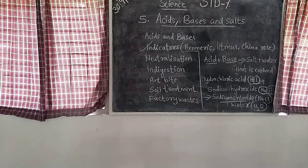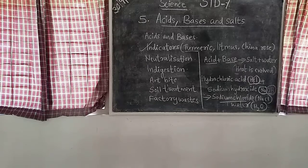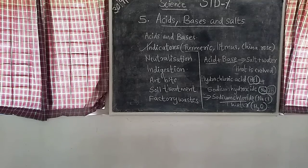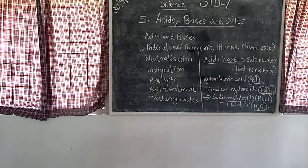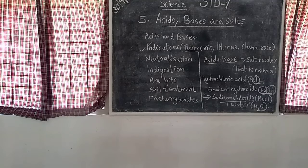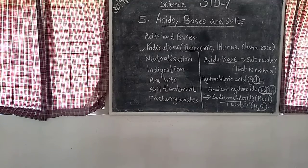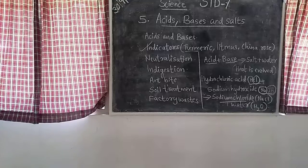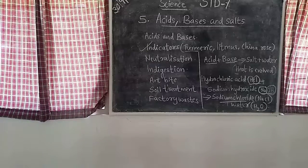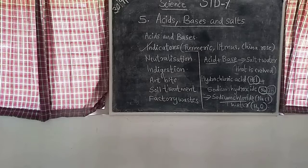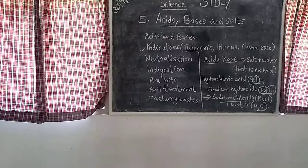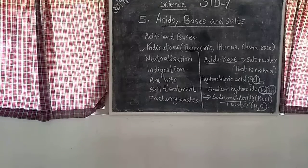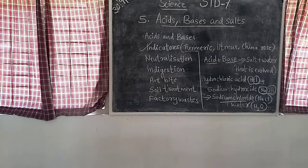Next is soil treatment. The excess use of chemical fertilizers makes the soil acidic. Plants do not grow well in soil that is too acidic or too basic. If the soil is too acidic, it is treated with bases like quick lime (calcium oxide) or slaked lime (calcium hydroxide).